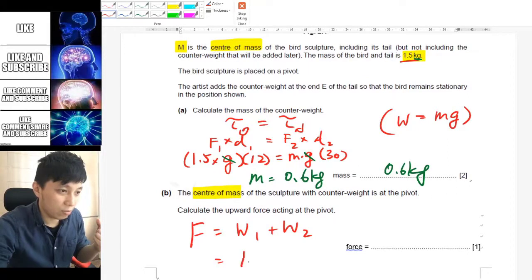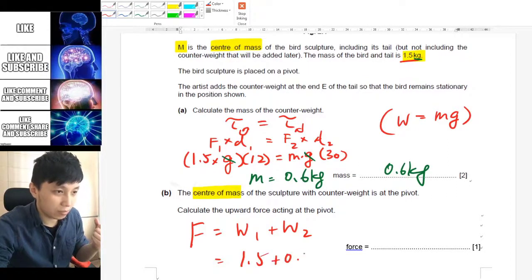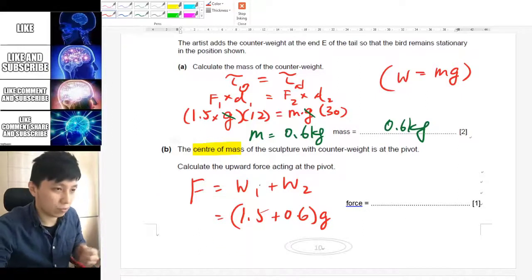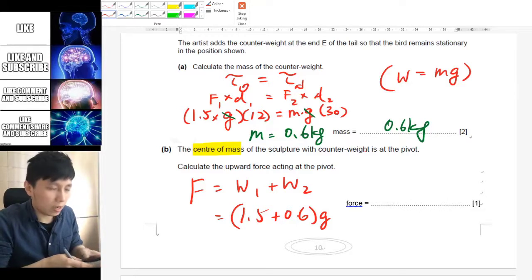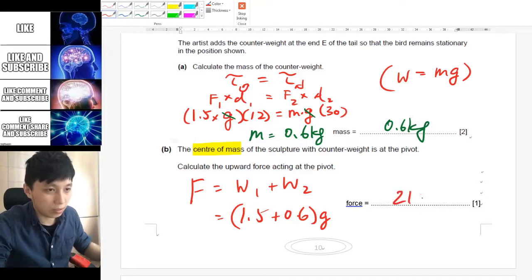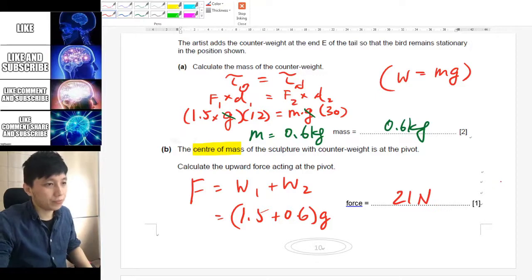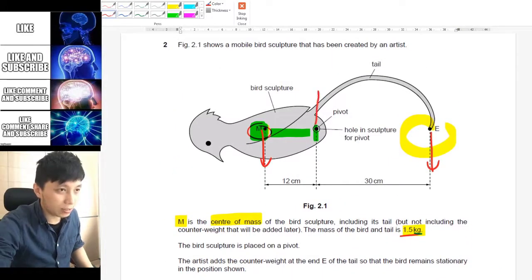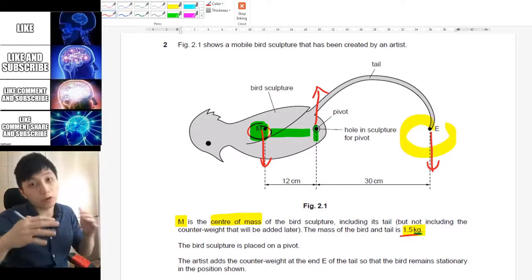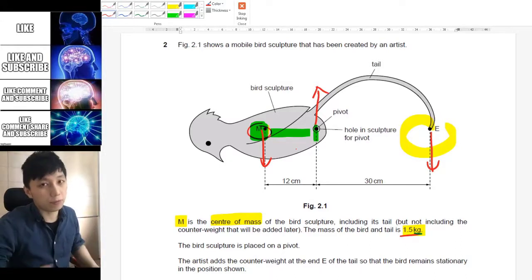So I'll say F equals W1 plus W2, which is the weight of each of them. So that's going to be 1.5 plus 0.6 times g. If you just combine them together because each of them equals M times g, so eventually it will be 2.1 times 10, so 21 simply. The unit is newtons, so 21 newtons is required so that the whole thing will also be balanced, so the net force will be zero.